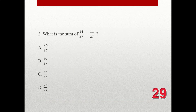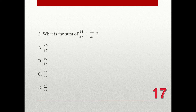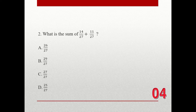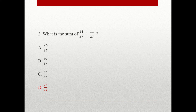Question number two. What is the sum of 14 over 27 plus 11 over 27? A. 26 over 27. B. 29 over 27. C. 27 over 27. D. 25 over 27. The correct answer is D. 25 over 27.